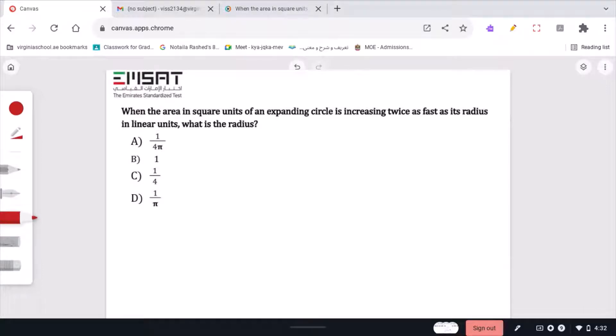When the area in square units of an expanding circle is increasing twice as fast as the radius in linear units, what is the radius? The choices are 1 over 4 pi, 1, 1 over 4, and 1 over pi.